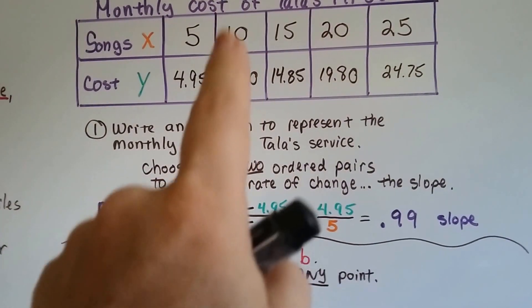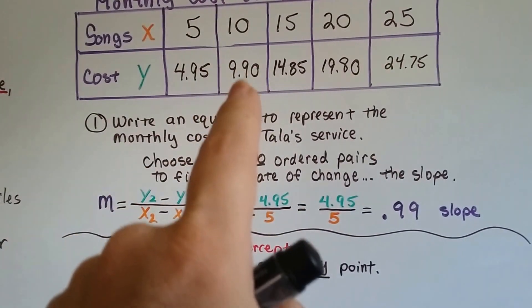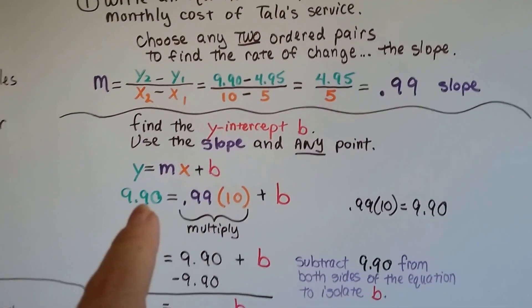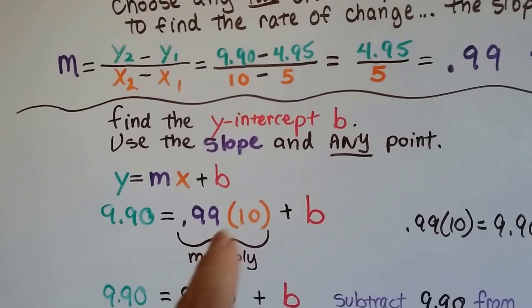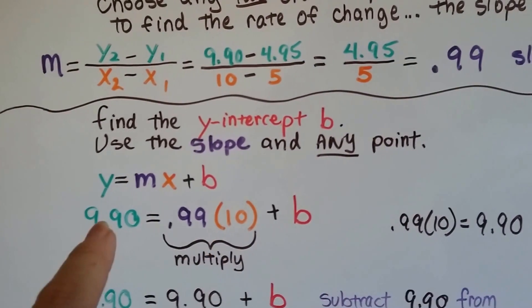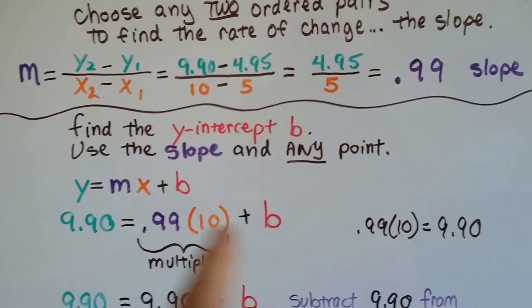I like to multiply by 10, because that's a nice round number to multiply by. So I chose 9.90 and 10. We plug them in as the x and y for our slope-intercept form. So we have 9.90 equals .99, that's what our slope is.